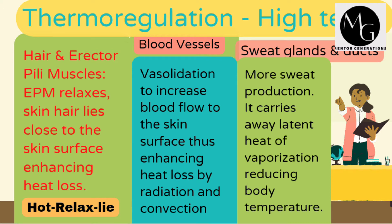The other response in high temperature is through the blood vessels: vasodilation of the superficial blood vessels of the skin increases blood flow to the skin surface, enhancing heat loss by radiation and convection. The sweat glands and ducts also respond — in high temperature, more sweat is produced. It carries away the latent heat of vaporization as water evaporates from sweat on the skin surface, reducing body temperature.